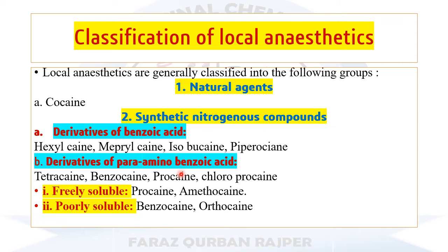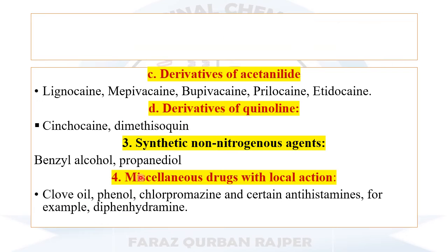Examples of para-aminobenzoic acid derivatives are tetracaine, benzocaine, procaine, and chloroprocaine. They are further subdivided on the basis of their solubility: some are freely soluble and some are poorly soluble. Benzocaine and orthocaine are examples of poorly soluble local anesthetics. The freely soluble examples include procaine and amethocaine. Another chemical class consists of derivatives of acetanilide, meaning the acetanilide ring is present in their structure. Examples are lignocaine, mepivacaine, bupivacaine, prilocaine, and etidocaine.